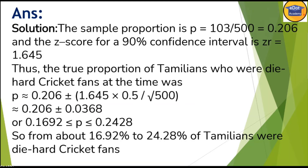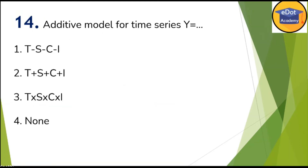The next question is a very direct question. The additive model for time series requires you to add T, S, C, I — you add all the values T+S+C+I. That is the answer. So option two is correct here.